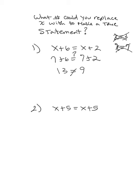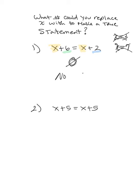We could keep guessing and checking, but could you find something to replace X with that would make a true statement? Probably not, because whatever X is, you're adding different numbers — a 6 on one side and a 2 on the other. So there isn't anything that's going to work. We say there is no solution. You can draw the circle with a slash through it — but be careful, don't confuse this symbol with the number 0. Never use the no-solution symbol for the number 0.